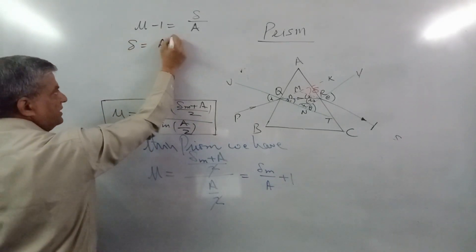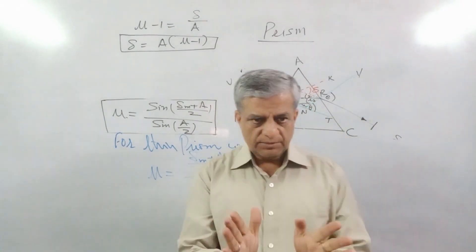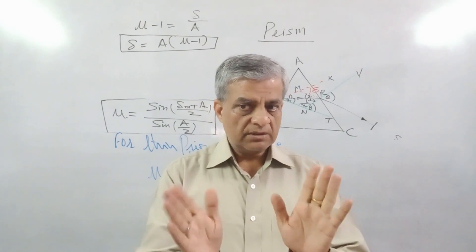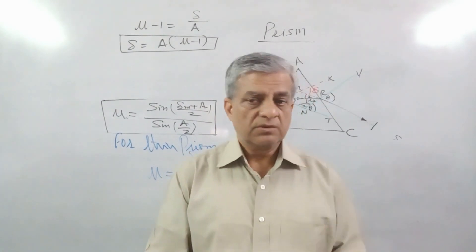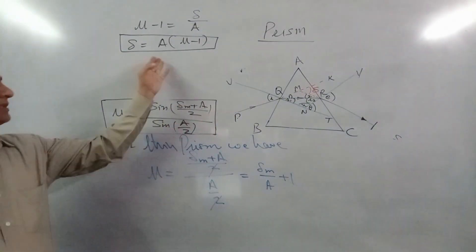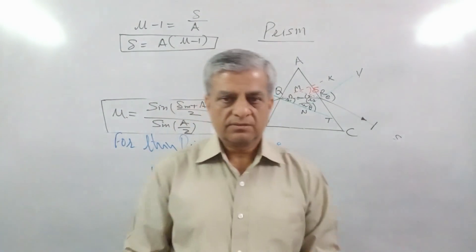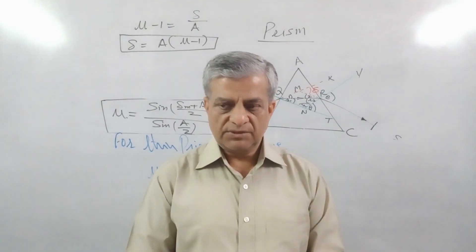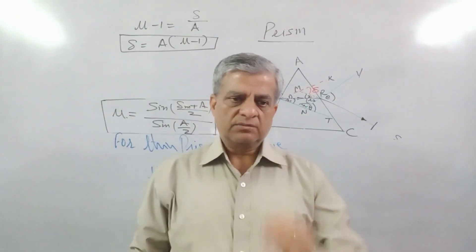δ is equal to A times (μ minus 1). So what do you see here? For a thin prism, the deviation is constant and independent of the angle of incidence. This is an assertion-reason type result: for a thin prism, the deviation is constant.